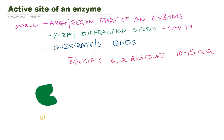This is an enzyme. This region is called the active site of an enzyme, where the substrate binds. It could be one substrate or more than one substrate, and this active site is usually made up of 10 to 15 amino acids.